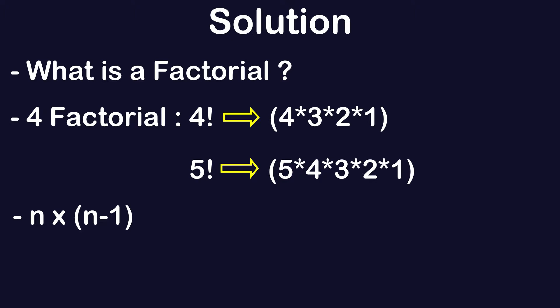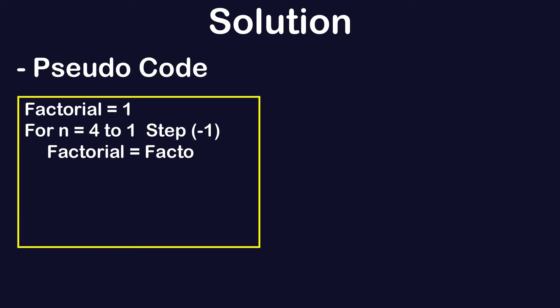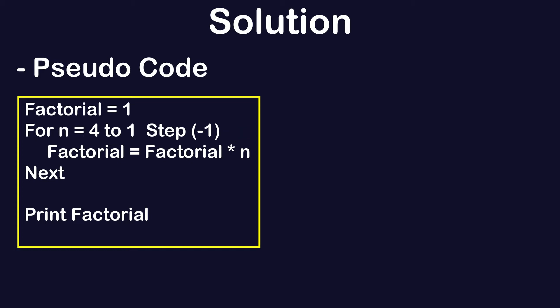To find 4 factorial, this is the process we have to execute. For example, if we take n = 4, for which we need to find the factorial, and the multiplication goes till the end. We can write the pseudocode like this: we take two variables — one is factorial and the second is n. n is the number for which we want to find the factorial. We say n = 4 down to 1, step −1. Factorial is initialized with 1.